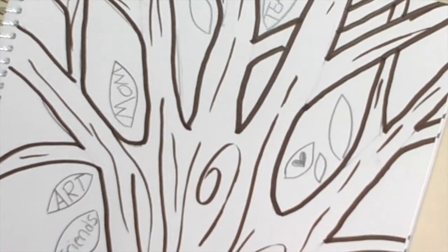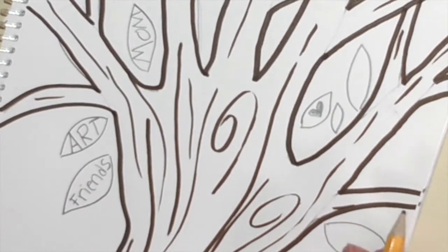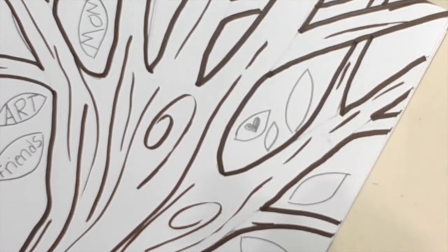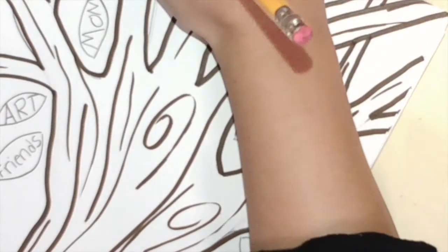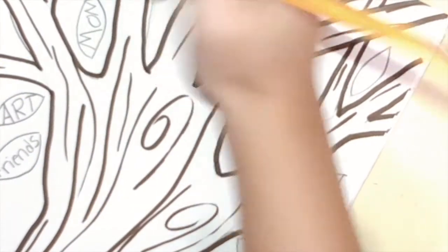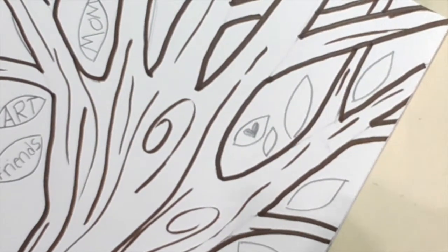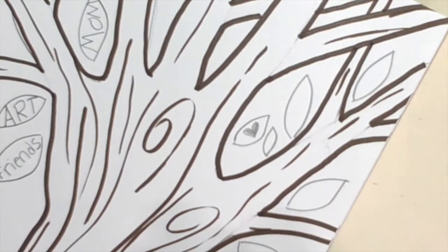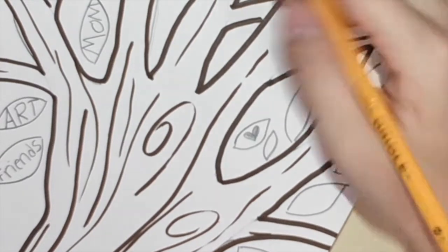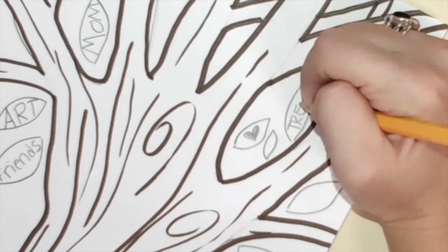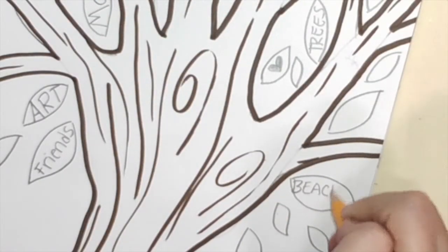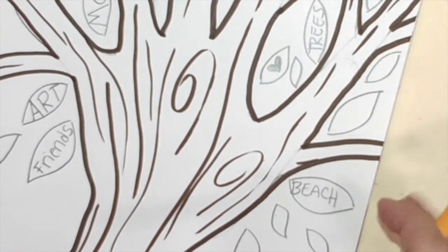I suggest you write this in pencil first because, so that if you do make a mistake, I can help you spell different words that you need help with. So you're going to keep making your leaves until you think you've had enough of leaves. I'm actually going to make a lot, a lot of leaves. I am thankful for trees. I love trees. I'm thankful for the beach. I'm thankful for the sun.